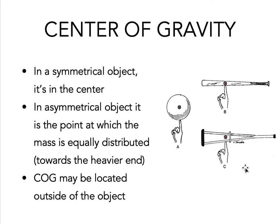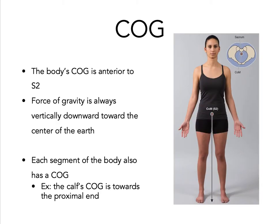Another example is a crutch. The person is holding it closer towards the heavier side of the crutch, which is where it is going to be balanced. The body's center of gravity is anterior to the S2 segment.